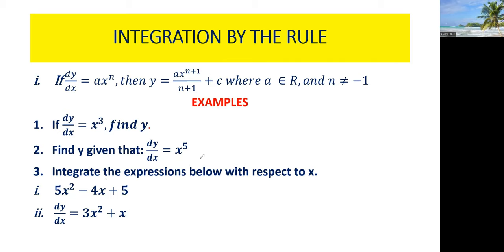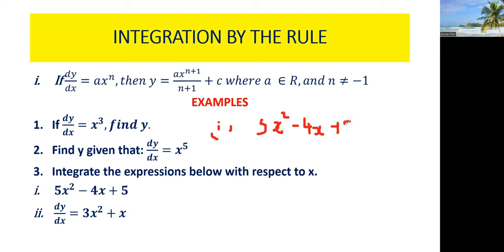Number 3: integrate the expressions below with respect to x. We have, first, 5x squared minus 4x plus 5. We bring in the integration symbol and start integrating. For this first term, we are going to add 1 to the power.